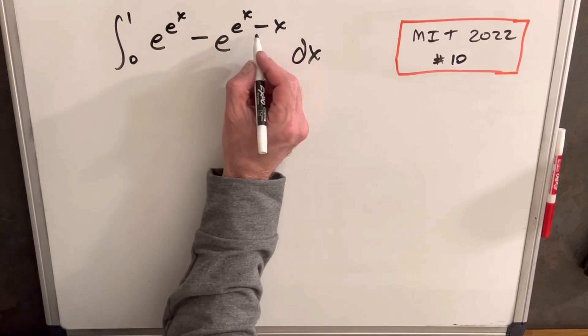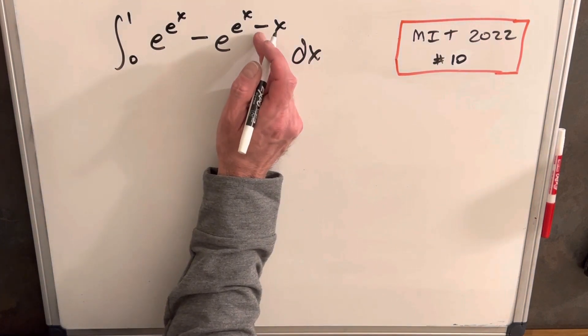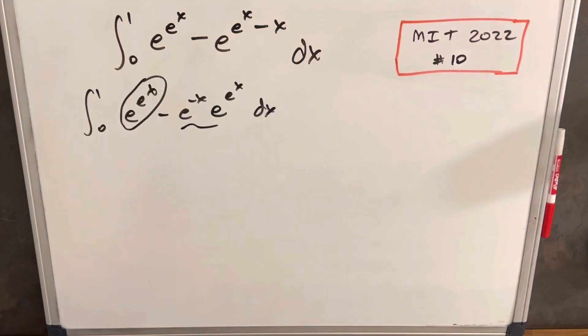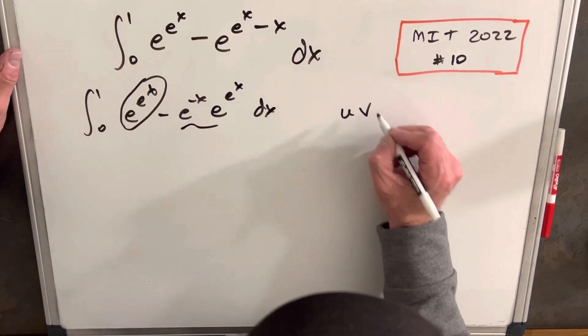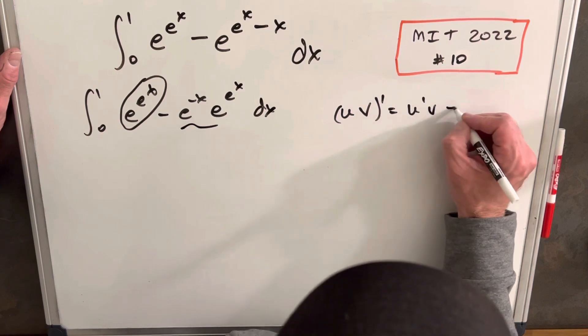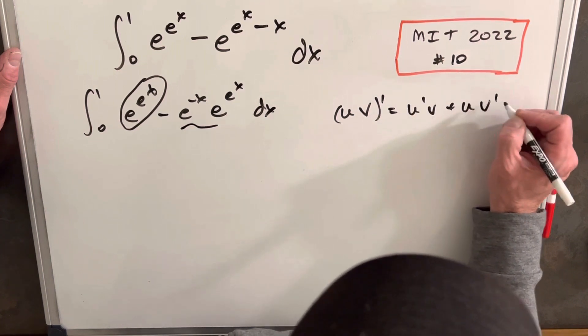I really don't like having addition or subtraction in the exponent, so I want to rewrite this. One thing to look out for is integrals that are the product rule. The product rule tells us if we have two functions uv, the derivative is u'v + uv'.